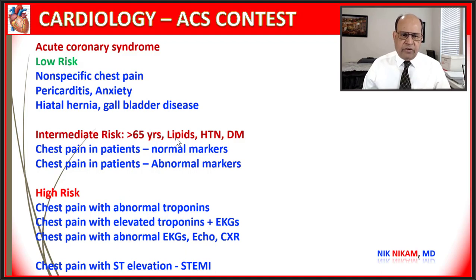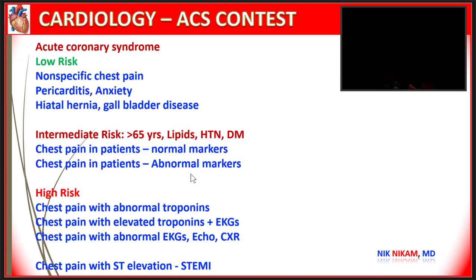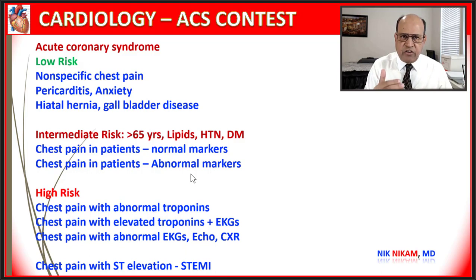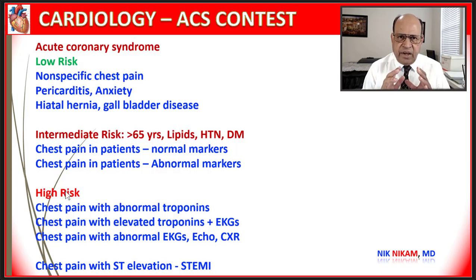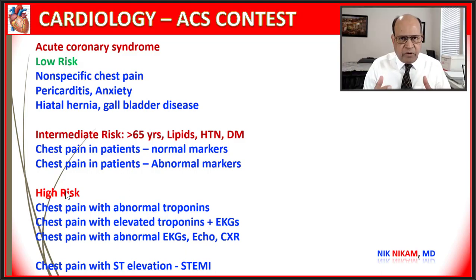The intermediate group of patients are older, with risk factors for heart disease like hyperlipidemia, diabetes, or hypertension. They can present with chest pain with normal or abnormal EKGs. The high risk group are patients who already have underlying heart disease — some had coronary artery bypass surgery or multiple stents, have heart failure, pacemakers, ICDs, low ejection fraction, and cardiac arrhythmias. When they present with chest pain, we need to approach those patients differently.